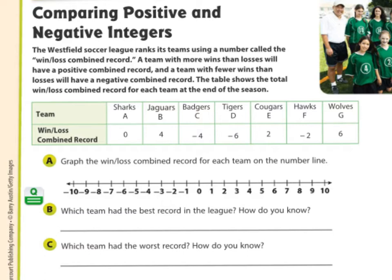I'm going to plot these points. This is the Westfield Soccer League, and it ranks its teams using a number called the win-loss combined record. A team with more wins than losses will have a positive combined record, and a team with fewer wins than losses will have a negative combined record. The table shows the total win-loss combined record for each team at the end of the season. The Wolves' win-loss combined record is 6.